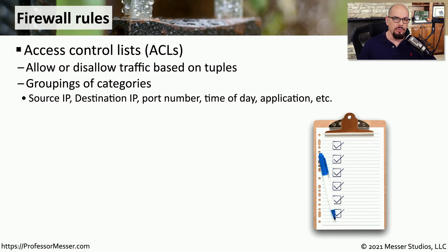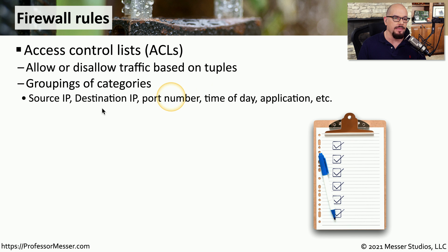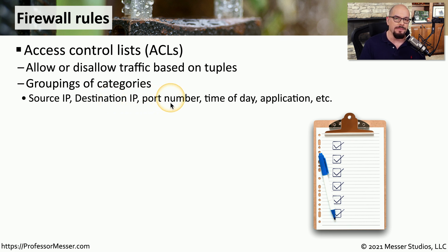We've described the rule base within a firewall that allows or disallows traffic — you might see this referred to as a security policy, or an access control list, or ACL. This provides us with a list of rules that the firewall will follow to decide whether information should be allowed or denied. The series of variables that you would choose are called tuples — groupings of information — so your firewall can make forwarding decisions based on the traffic itself. It can evaluate whether there is a source IP, a destination IP, a particular port number, the time of day, the application being used, and other criteria. The firewall evaluates all of these characteristics to see if it can match any rules within the access control list.